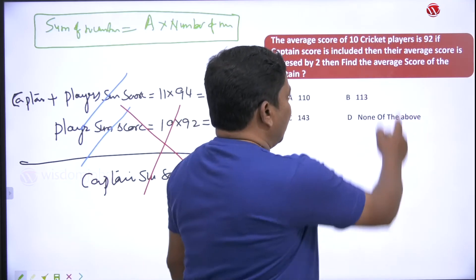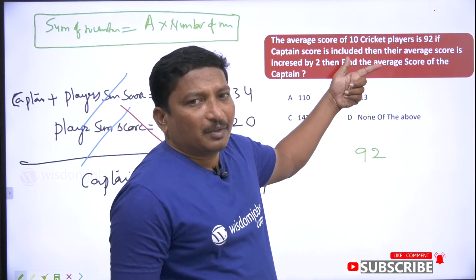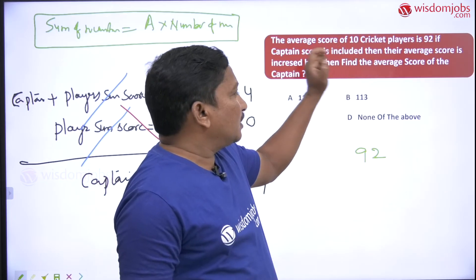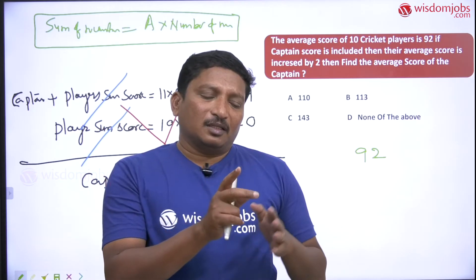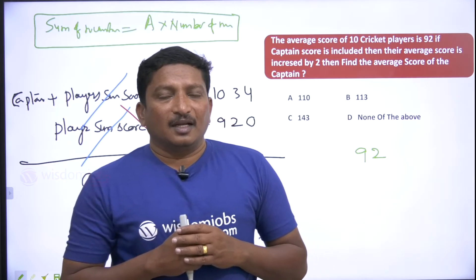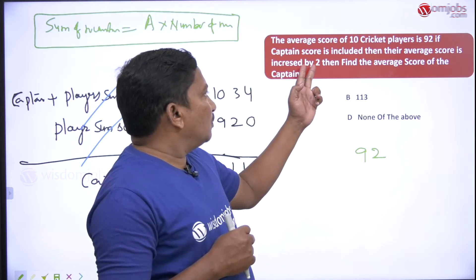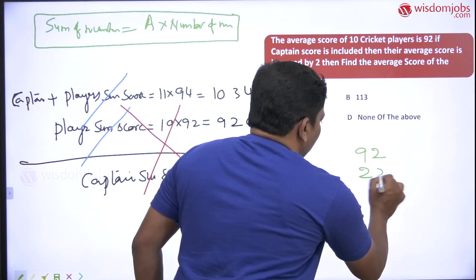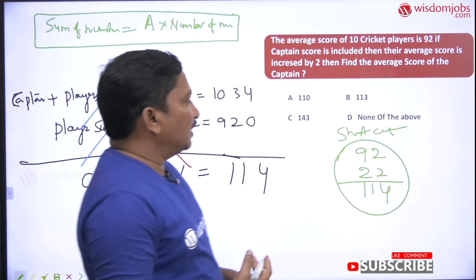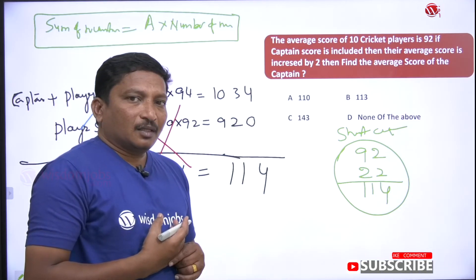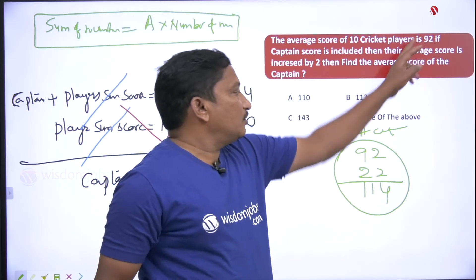Now for the shortcut method. How many players are given? 10 are given with an average score of 92. Initially there are 10 members. When the captain's score is added, that becomes 11 members. With 11 members, each one's average is increased by 2, so: 11 multiplied by 2 equals 22.